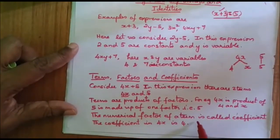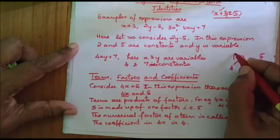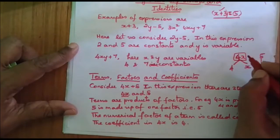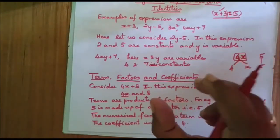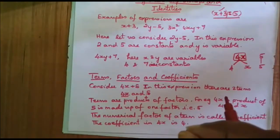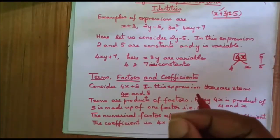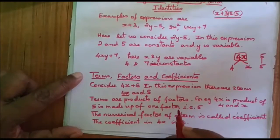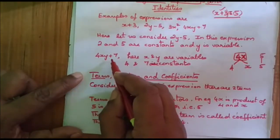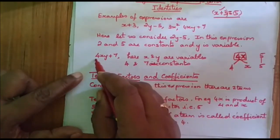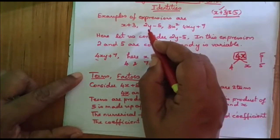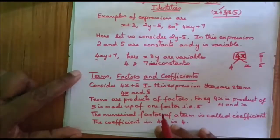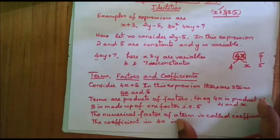The numerical factor of a term is called the coefficient. In the case of 4x, 4 is the coefficient of the variable x. Any term in which you have a variable — the number along with the variable is called the coefficient. So in 4xy plus 7, 4 is the coefficient. In 2y minus 5, 2 is the coefficient.